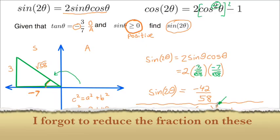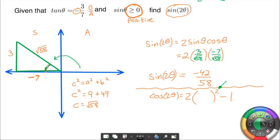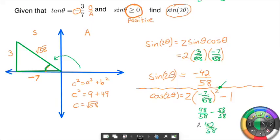The cosine of θ is negative 7 over √58. When we square it, it becomes positive 49 over 58. Then 49 times 2 is 98, so we have 98 over 58 minus 1, which is 58 over 58. That leaves us 40 over 58. So the cosine of this double angle is 40 over 58.